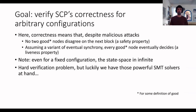First, no two good nodes should ever disagree on the next block to append to the blockchain, which is a safety property. Second, assuming a variant of eventual synchrony, every good node must eventually decide on a new block to append to the blockchain. This is a liveness property.